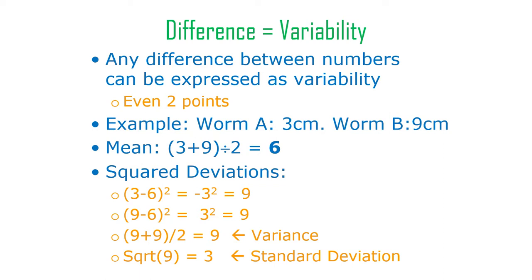You can do that with two numbers, three numbers, ten numbers — anything except just one. Difference and variability are essentially the same thing, and that's the big insight that helps you understand what's going on with analysis of variance. We're flipping back and forth between difference and variability; we're using variability to tell us about differences.